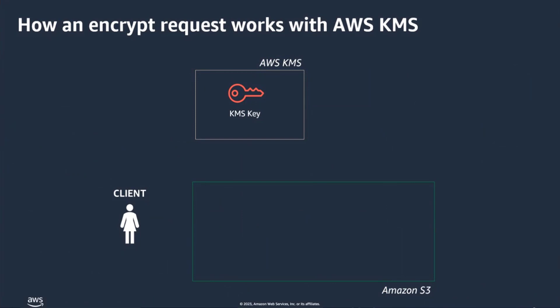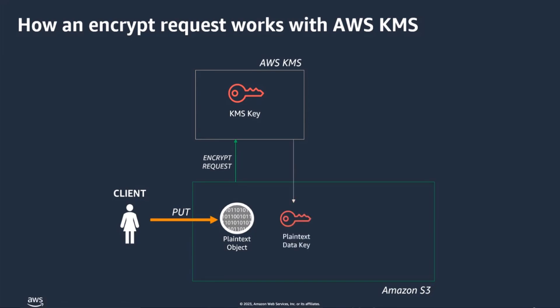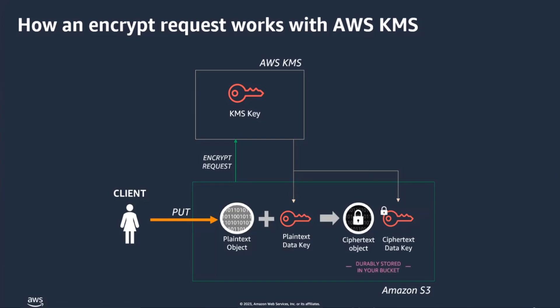If you choose to encrypt your objects using an AWS managed key or a customer managed key, AWS KMS and Amazon S3 perform the following envelope encryption actions. Upon uploading your object, Amazon S3 requests a plain text data key and a data key encrypted by your KMS key. Then Amazon S3 encrypts the object using the data key and removes the plain text key from memory as soon as possible after use. Finally, Amazon S3 stores the encrypted data as metadata with the encrypted object.